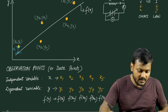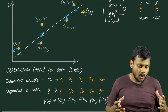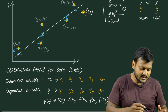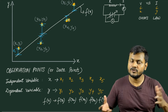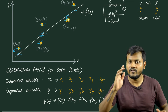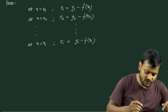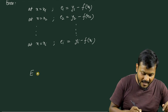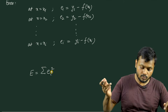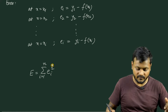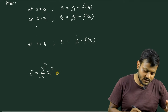The values e1, e2, e3 represent the errors associated with each individual point. Now, these errors can be positive or negative, so I cannot just add them up because positive and negative errors would cancel each other out, giving no meaningful information. Instead, I want to find the square of the errors, because the square of errors is always positive. So I define the quantity capital E as the summation of squared errors from i=1 to n: E = Σ(e_i²).